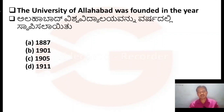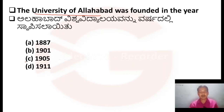The question is: the University of Allahabad was founded in which year? Option A: 1887. Option B: 1901. Option C: 1905. Option D: 1911.